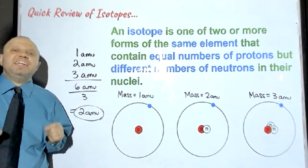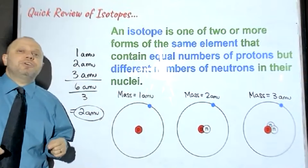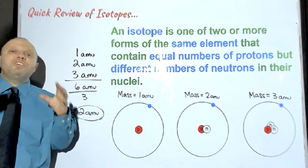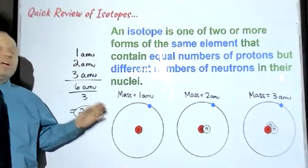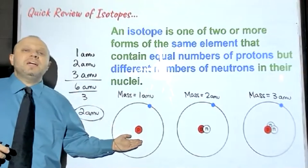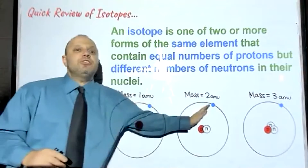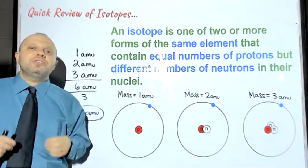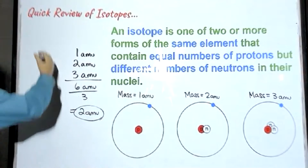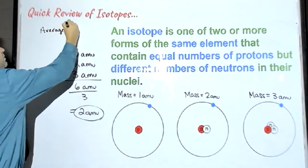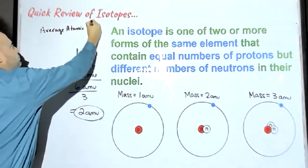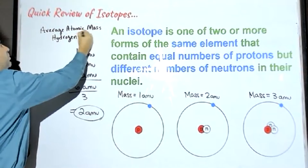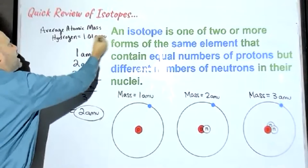What we're going to learn today is called a weighted average, and it's different. A weighted average takes into account which isotope is the most popular. We'll come to find out that the first hydrogen isotope is a lot more common than the others. Therefore, when you look up average atomic mass for hydrogen on a periodic table, you see 1.01 AMU.